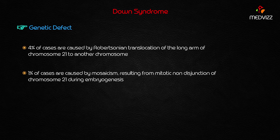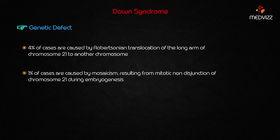Approximately 4% of Down syndrome cases are caused by Robertsonian translocation — specifically, translocation of the long arm of chromosome 21 to another chromosome, usually chromosome 14 or 22. This is an important cause but occurs in a very small number of cases.